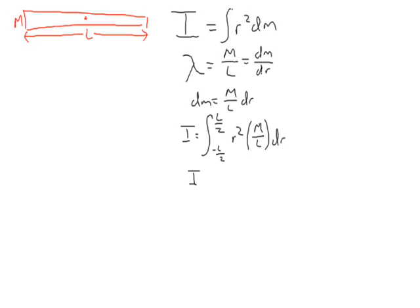m over l is a constant, so I equals m over l times r cubed over 3, evaluated from negative l over 2 to l over 2.